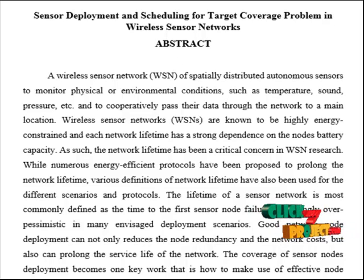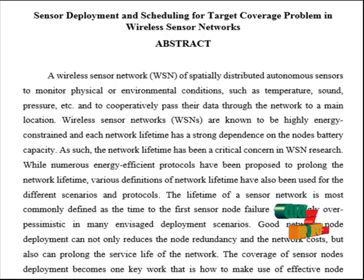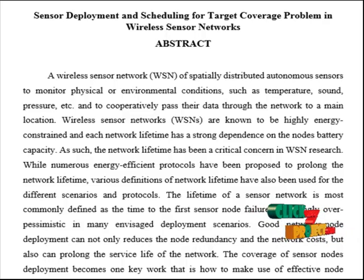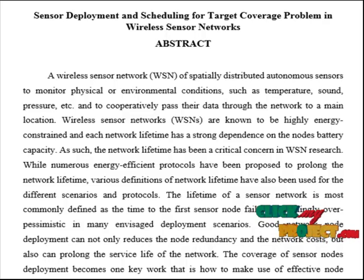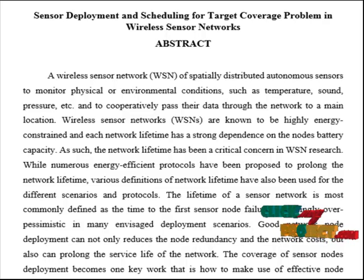A wireless sensor network consists of spatially distributed autonomous sensors to monitor physical or environmental conditions such as temperature, sound, pressure, etc., and to cooperatively pass their data through the network to a main location. Wireless sensor networks are known to be highly energy constrained, and each network's lifetime has a strong dependence on the node's battery capacity.